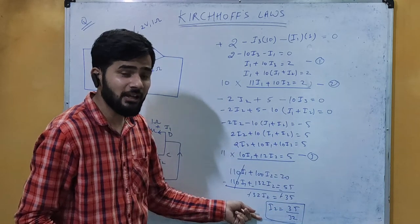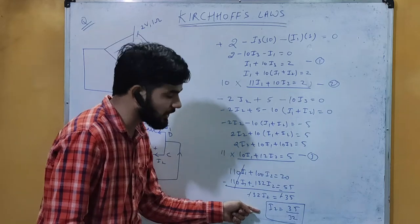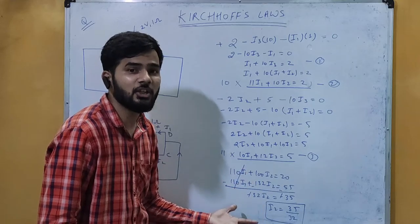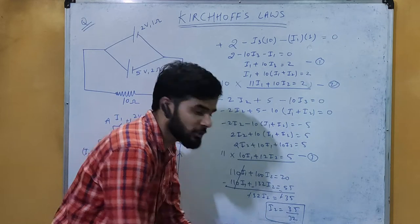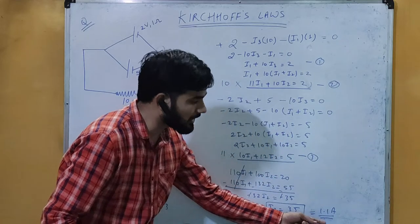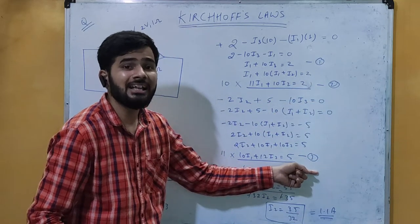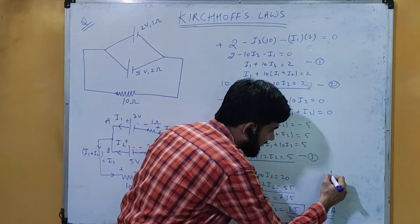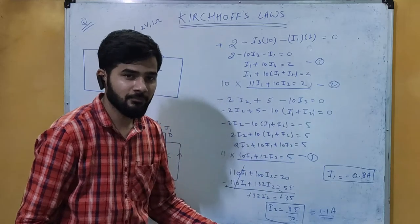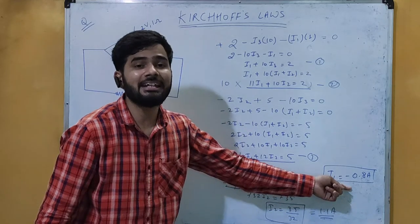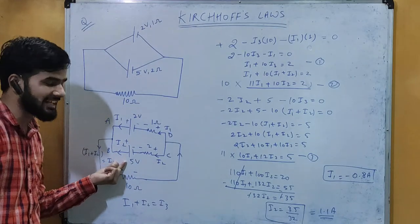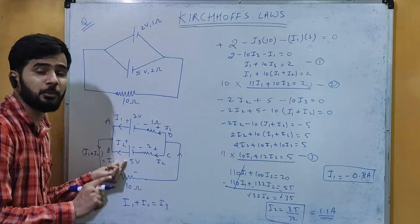To find the value of i1, substitute the value of i2 into either equation. When you solve, you get i2 equal to approximately 1.1 ampere. Substituting into equation 2 or equation 3, you get the value of i1 equal to minus 0.8 ampere. Now, what is the meaning of the negative sign? Negative sign means the direction of current we assumed for i1 is exactly opposite to the actual direction.